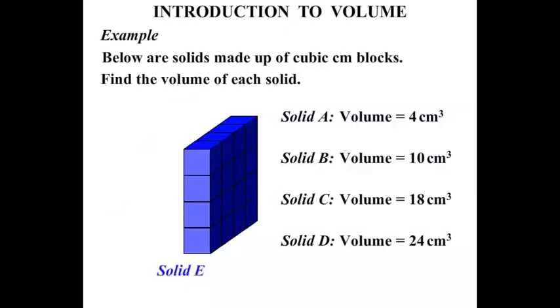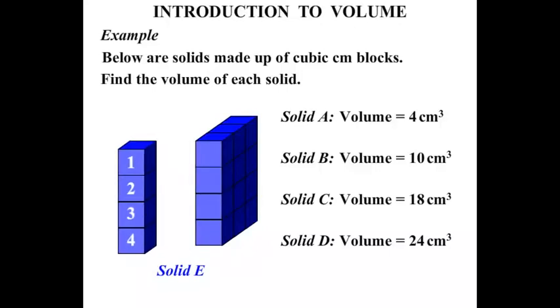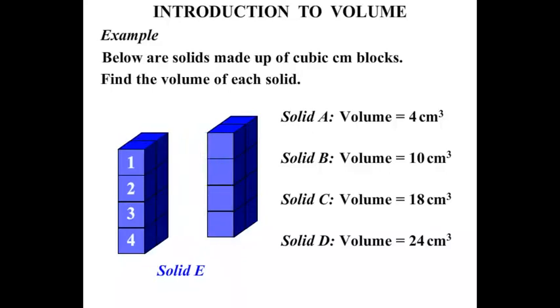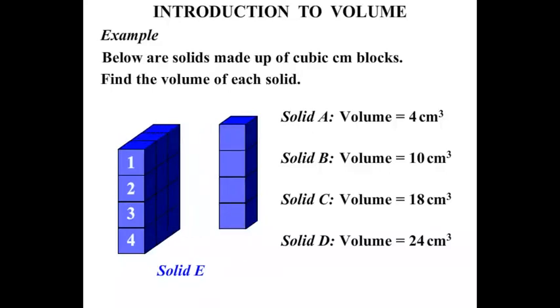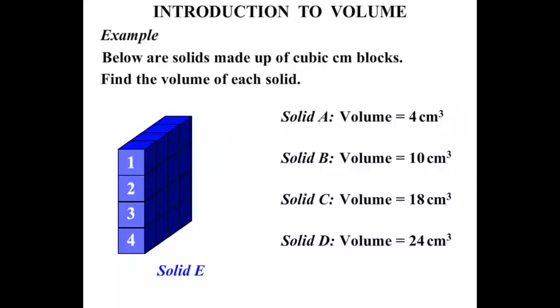All right, solid E. OK, a skinnier one this time. 1, 2, 3, 4. OK, the front layer there has 4. Let's move it across. There's another layer there. And another. And another. So what have we got? We had 4 layers. So we have 4 lots of 4. And 4 4's are 16.